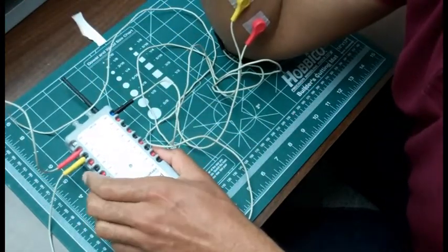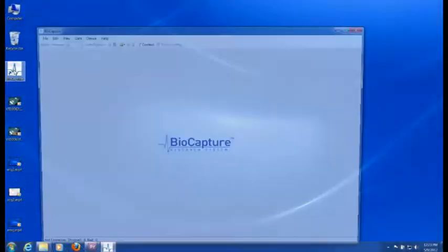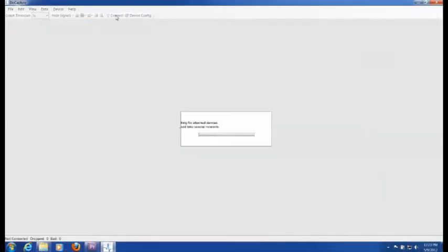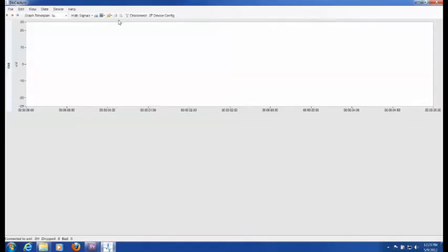We will then run biocapture and click connect. We will then press device config and program the bioradio for one channel of EMG.